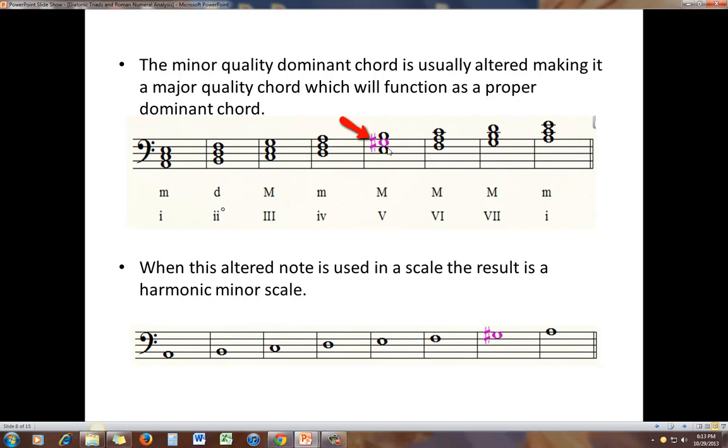And the way that that is done is the third of the dominant chord is raised a half step. And now we have a major chord. And the quality and the Roman numeral are reflected here. When you use this altered tone from the dominant in the scale, the result is the harmonic minor scale.